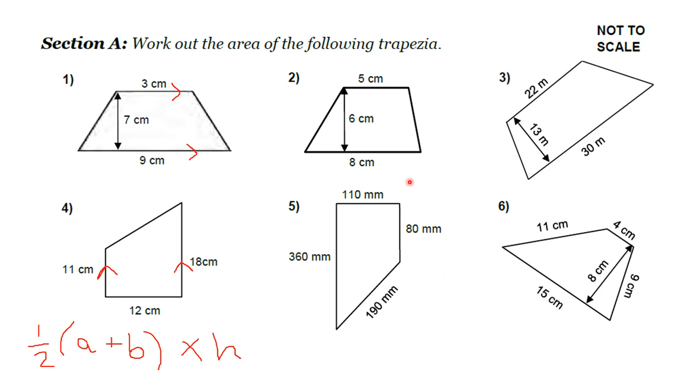Now be careful on questions 5 and 6. These are harder because they've given us extraneous information, which is they've given us extra bits to try and trick us. Now these four sides would be useful if I want to know the perimeter, because I could add the four sides up, but for the area I don't need all of them. So it's really important that you identify your parallel sides.